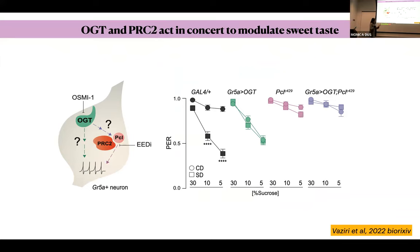We wanted to know whether the metabolic enzyme OGT and the chromatin silencing complex PRC2 work in concert or affect neuronal activity through different pathways. In epistasis experiments: overexpressing OGT produces flies that sense sucrose poorly on both control and sugar diets; mutating the chromatin repressor rescues this effect; and when we combine both, we prevent OGT activation from affecting taste plasticity. This suggests that PRC2 acts downstream of the metabolic enzyme OGT, and we have additional data to support that.